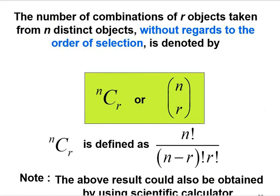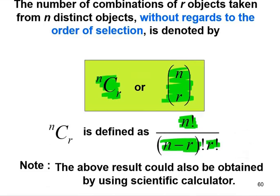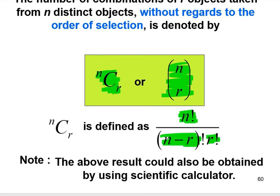The number of combinations of r objects taken from n distinct objects without regard to the order of selection is denoted by nCr. The definition is nCr equals n factorial over n minus r factorial times r factorial, and the value can also be obtained directly by using calculator.